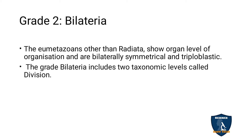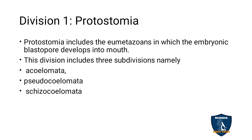Bilateria is divided into two taxonomical divisions. The first division is Protostomia — at the embryonic level, the mouth is developed from the embryonic stage. Protostomia is subdivided into Acoelomate (absence of body cavity), Pseudocoelomate (false body cavity), and Coelomate (true body cavity).